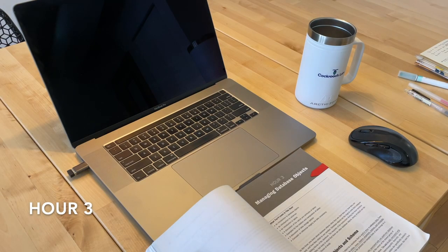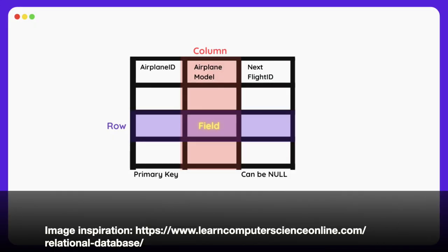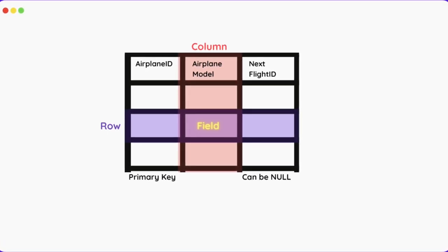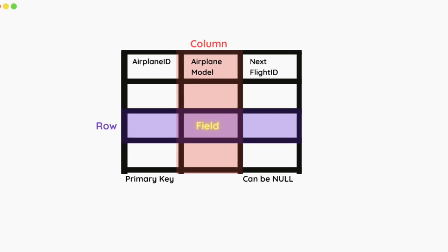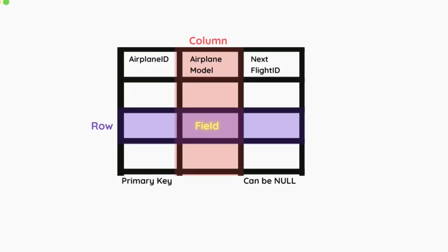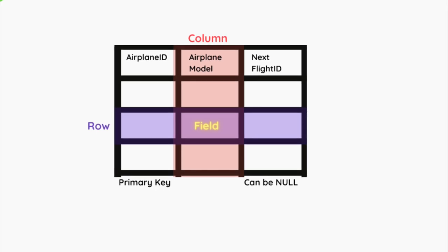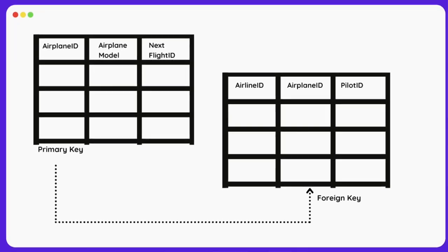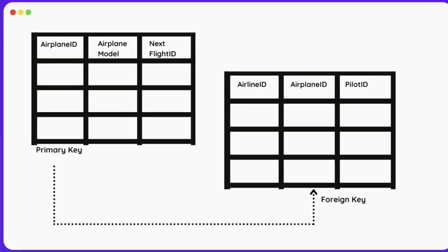Hour three: managing database objects. Just finished hour three. It covered database objects and schemas. Database objects are things like tables, views, indexes, and sequences. A database schema is a collection of those database objects. The chapter talked about tables as the primary storage object for data in a relational database, and that a table consists of rows and columns. I also learned about integrity constraints like the primary key constraint — the primary key identifies one or more columns in a table that make a row of data unique — and foreign key constraints, where a foreign key is a column in one table that references a primary key in another table.